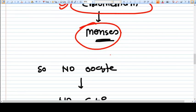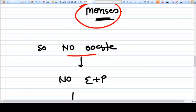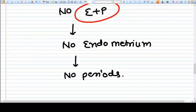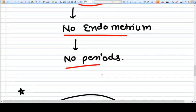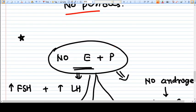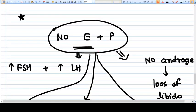Menopause is not just cessation of periods. If there is no oocyte, there is no estrogen and progesterone. Once there is no estrogen and progesterone, there is no endometrium, and that's why there are no periods. Periods or menses is a sole property of endometrium.